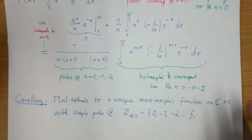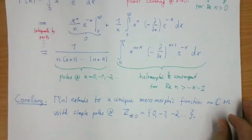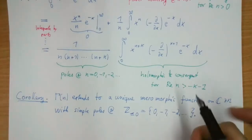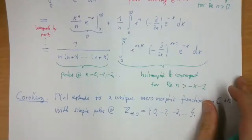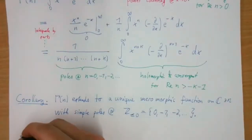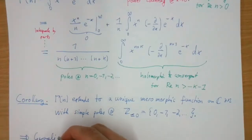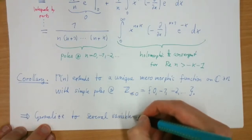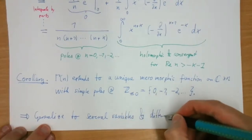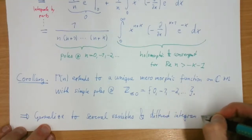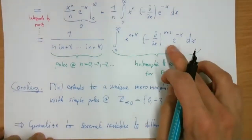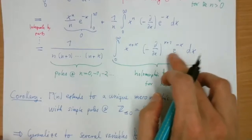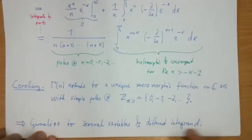This is literally a proof of this corollary. If you don't know the behavior of the gamma function, now you know: it has poles at zero, minus one, minus two, and so on; all poles are simple. The same is essentially true for an arbitrary Feynman integral. We want to generalize this to Feynman integrals, which have a different integrand and several variables instead of one.